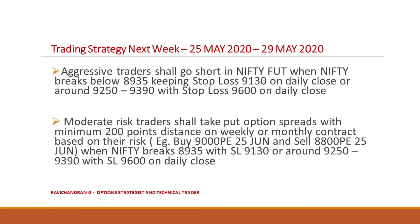Aggressive traders shall go short in Nifty futures when Nifty breaks below 8935, keeping stop loss above 9130 on daily close. On the upside, if Nifty goes up they can short around 9250 to 9390 with stop loss above 9600 on daily close. Moderate risk traders shall take put option spreads this week also, with minimum 200 points distance on weekly or monthly contract — when Nifty breaks below 8935 with stop loss at 9130, or initiate a put spread when Nifty goes up to 9250–9390 with stop loss at 9600 on daily close.